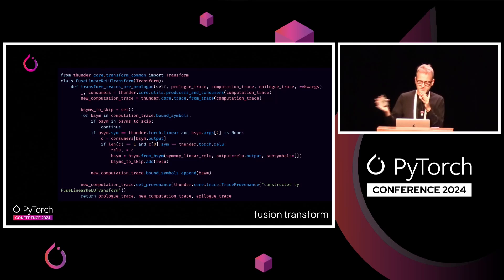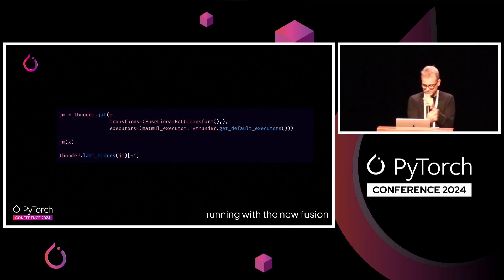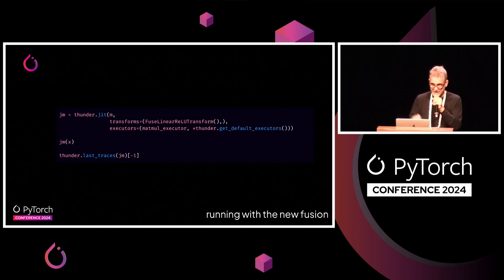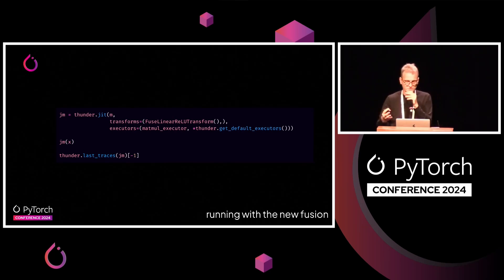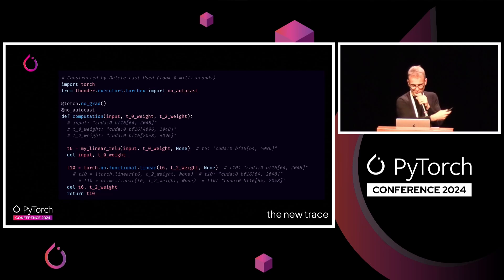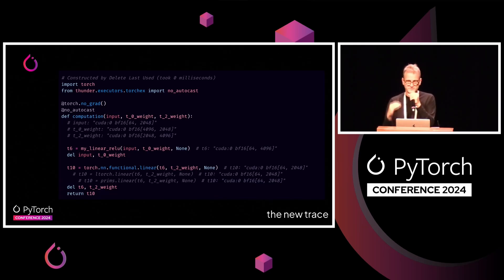This way it becomes easy, and there's a bunch of facilities to help you write things that will compose together. And now we can invoke ThunderJIT again with the transforms that we added — the Fused Linear ReLU transform — and the executors that we just defined. We just run the model and now the computation will run with my new Triton kernel. We can see the new trace generated after ThunderJIT will contain my linear ReLU function call. And it didn't fuse the last linear because it wasn't followed by ReLU.